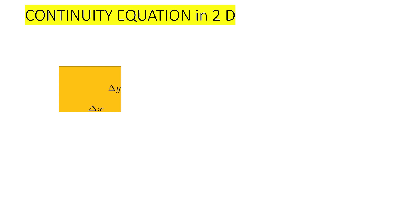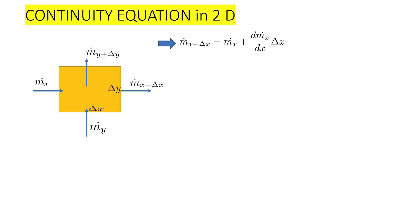Now let us see the continuity equation in two dimensions. We take a region of size delta x and delta y. The left side mass entering is ṁ_x and the right side mass leaving is ṁ_{x+δx}. In the y direction, mass entering is ṁ_y and mass leaving is ṁ_{y+δy}. So ṁ_{x+δx} equals ṁ_x plus (dṁ_x/dx)·δx, and ṁ_{y+δy} equals ṁ_y plus (dṁ_y/dy)·δy.